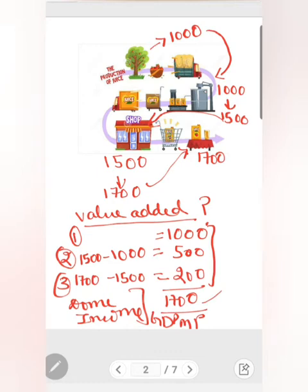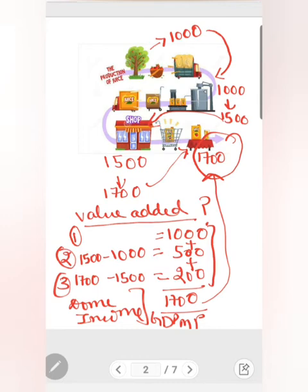You can see that 1700 is actually equal to the value of final goods consumed by the household. Thus, according to the value added method, GDP at MP is the sum total of value added by all productive units.